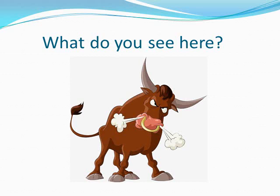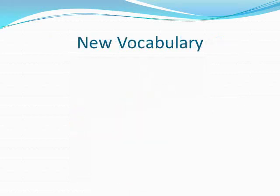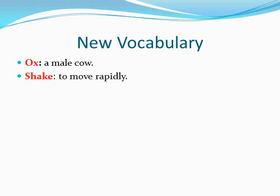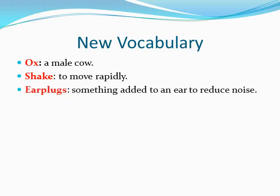Do you know the difference between a male and a female? Now guys, let's move to new vocabulary. Let's start with: an ox — an ox is a male cow. The second one: shake — shake is to move rapidly.